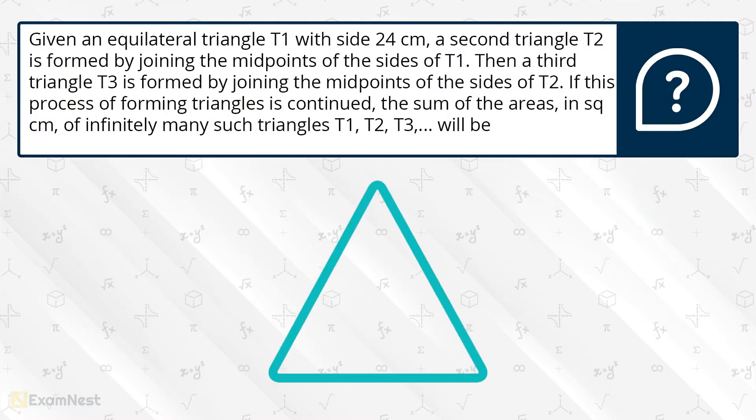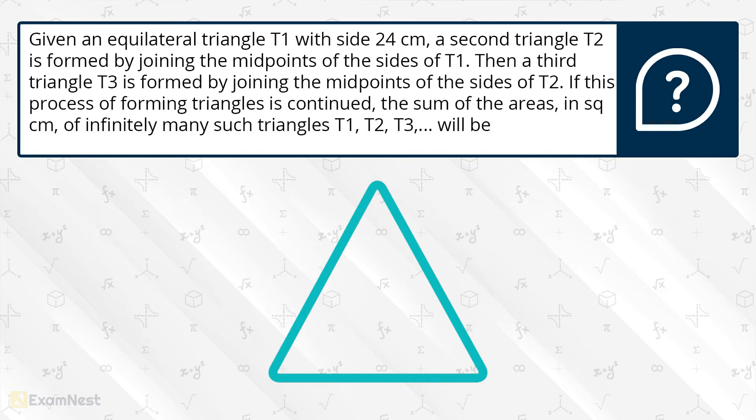Given an equilateral triangle T1 with side 24 cm, a second triangle T2 is formed by joining the midpoints of the sides of T1. Then a third triangle T3 is formed by joining the midpoints of the sides of T2. If this process of forming triangles is continued, the sum of the areas in square centimeters of infinitely many such triangles T1, T2, T3 and so on will be. And the options are given.